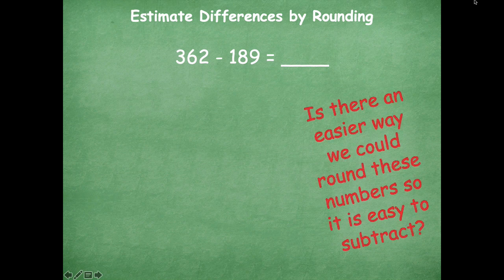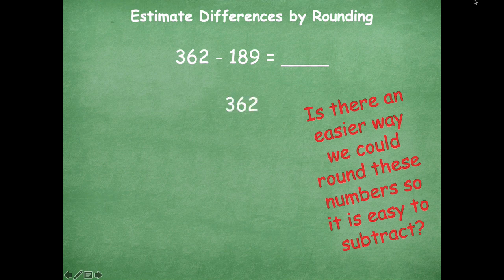Is there an easier way that we could round these numbers to subtract? When I look at these numbers, I see that one of them is pretty close to the next hundred. So I want to keep 362 exactly the same, and just round 189 to the nearest hundred, which is 200. If I subtract those, that's a pretty easy way to do in my head — mental math — giving 162. When you add those zeros in, it's way easier to use that mental math, which is what we like.